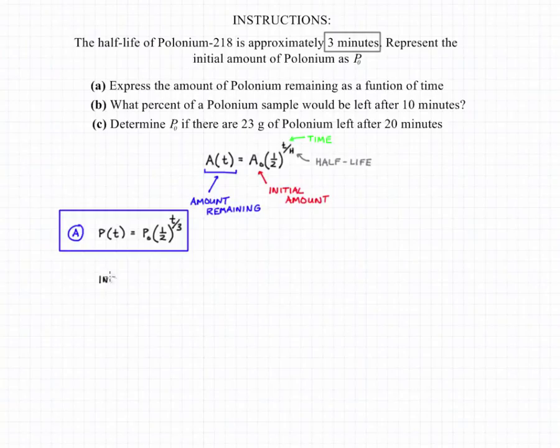Now part (b) is tricky because we're not given an initial or a final amount—we're just told the time that we're going to leave the polonium out and we want to know what percent will be left. So the amount remaining after 10 minutes is going to equal the initial amount times one-half raised to the 10—that's our 10 minutes—over 3.